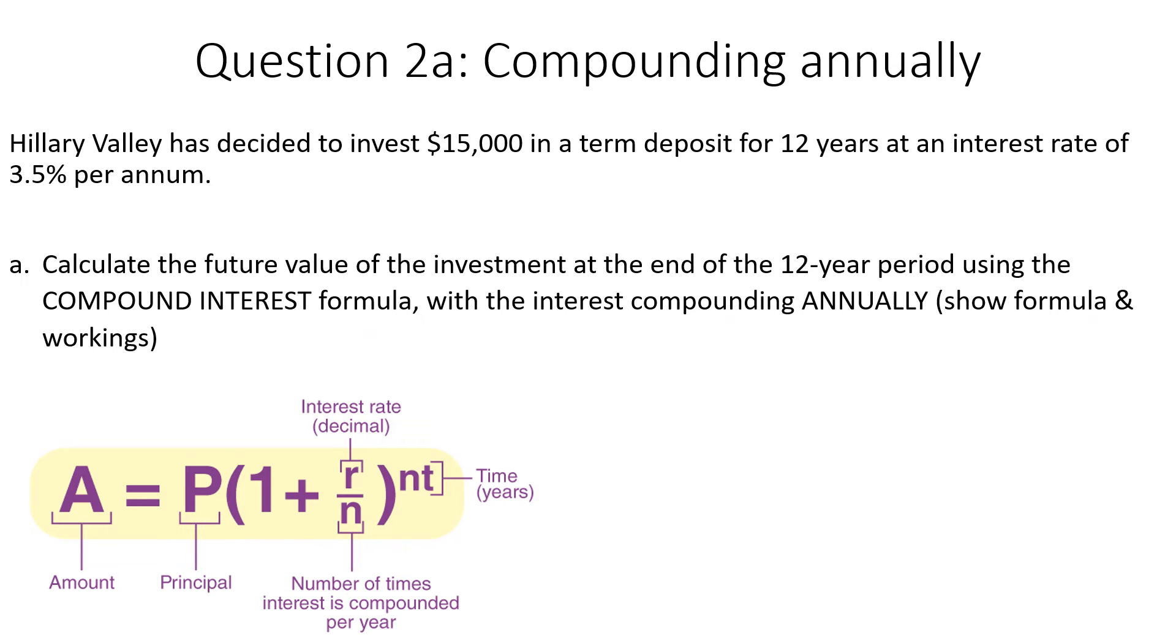Okay, let's go again. Step one, formula. Step two, identify the variable. So this time principle is 15,000. T is 12 years. R is 0.035. And again, this time we're going annually. So N equals 1.